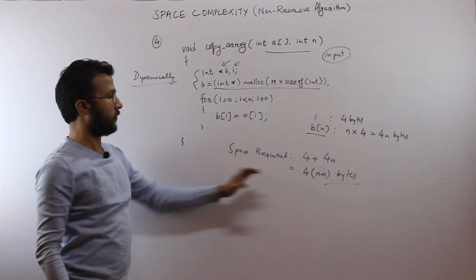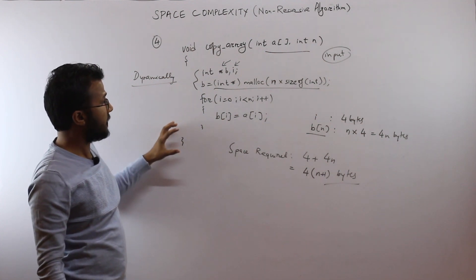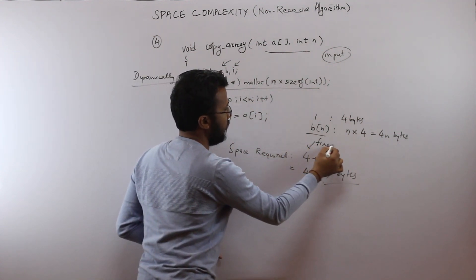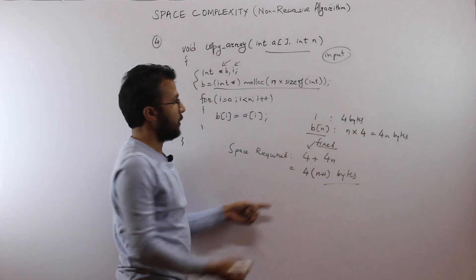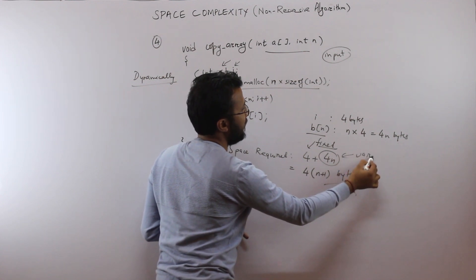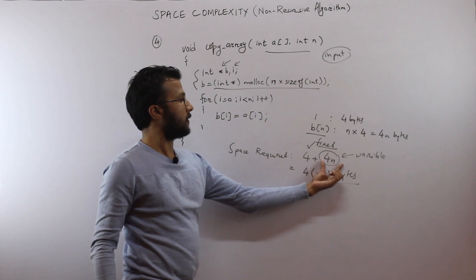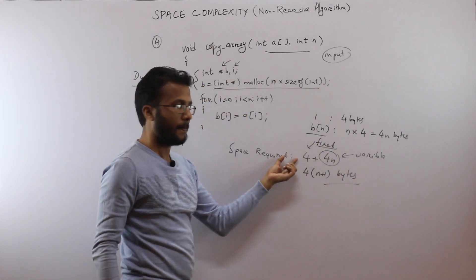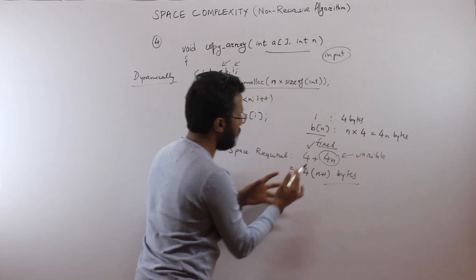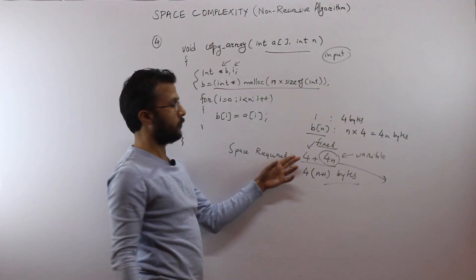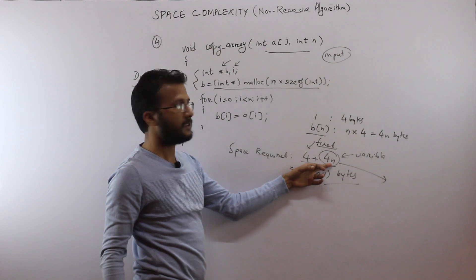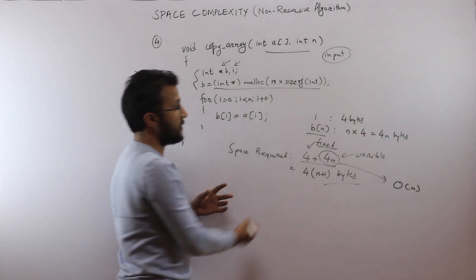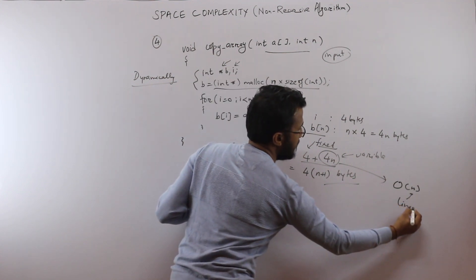There are two components in this space complexity calculation. The fixed part — whatever may be the value of n, this will always be 4 bytes. The variable part — depending upon the size of n, the size of this term also changes. So we have 4n + 4. Since 4n is of higher order than 4 (4n is linear while 4 is constant), we write this as O(n). This function has a linear space requirement.